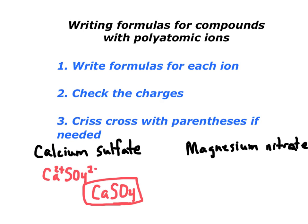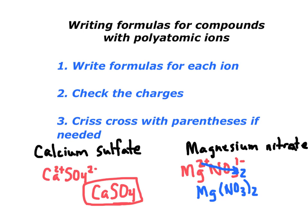For magnesium nitrate: nitrate is NO3 with a 1− charge, and magnesium has a 2+ charge. They don't cancel out, so I have to crisscross — the 2 comes down, but I don't write it as 32 oxygens, and I never take the 1 down. In order to write this correctly, I need two sets of NO3. So I write Mg(NO3)2. That is magnesium nitrate — and that's the only time you need parentheses, when you need multiples of the polyatomic ion.